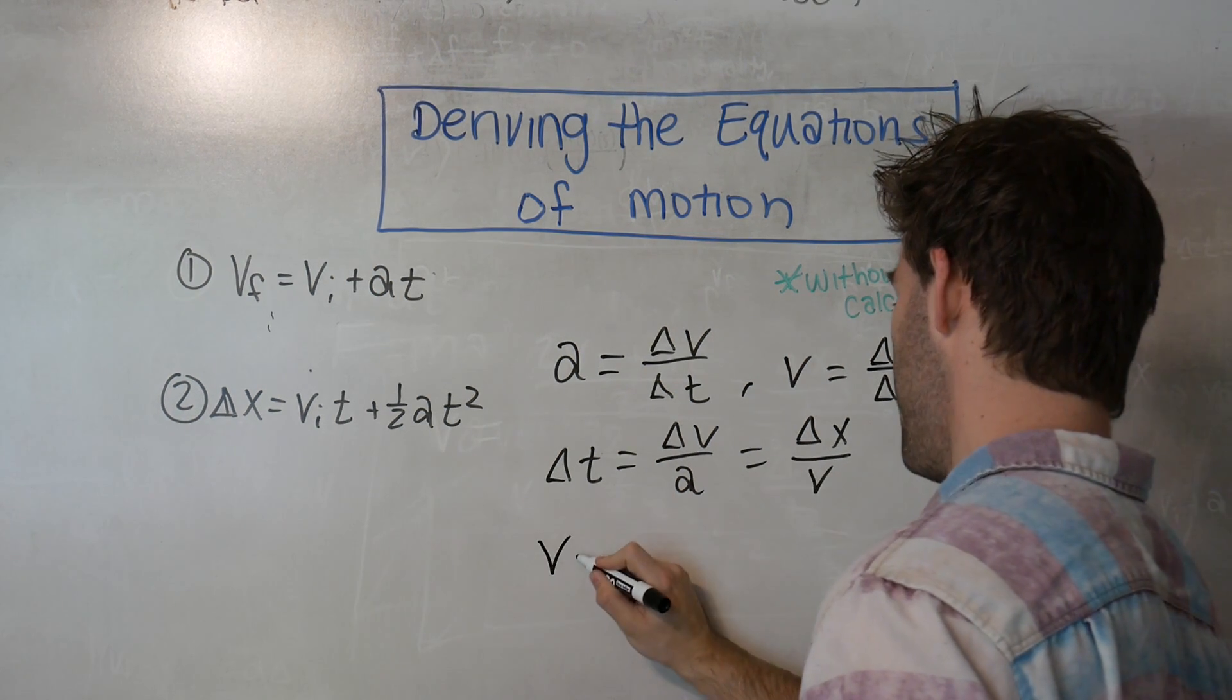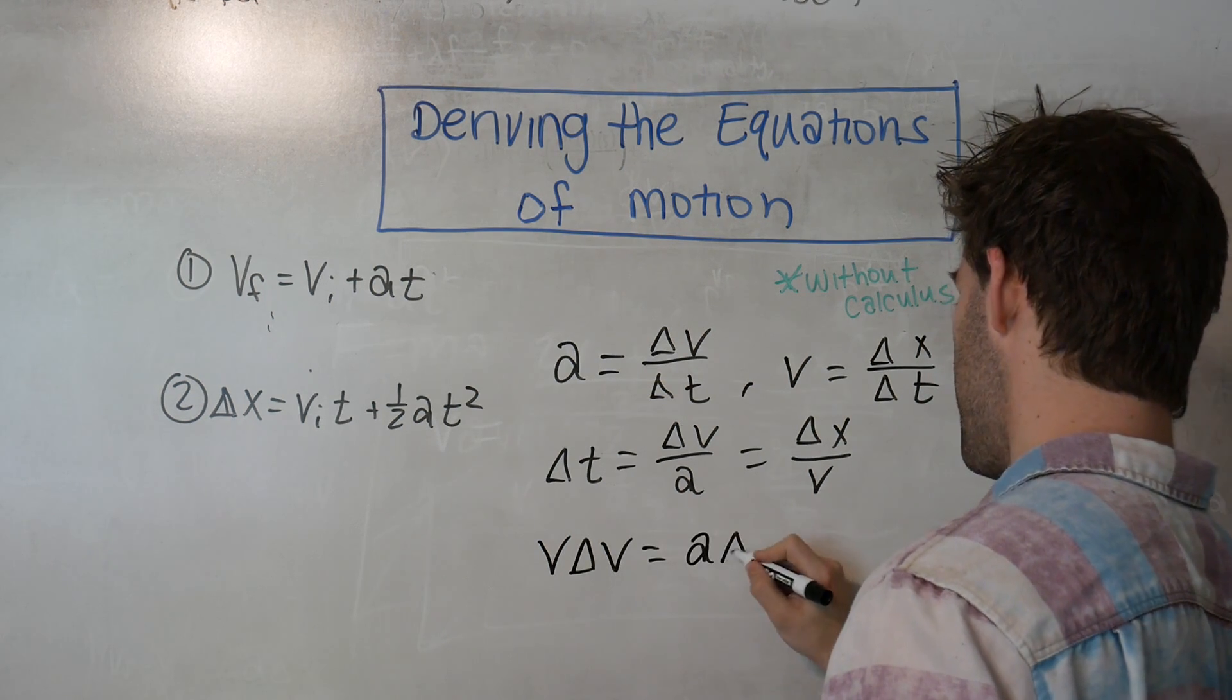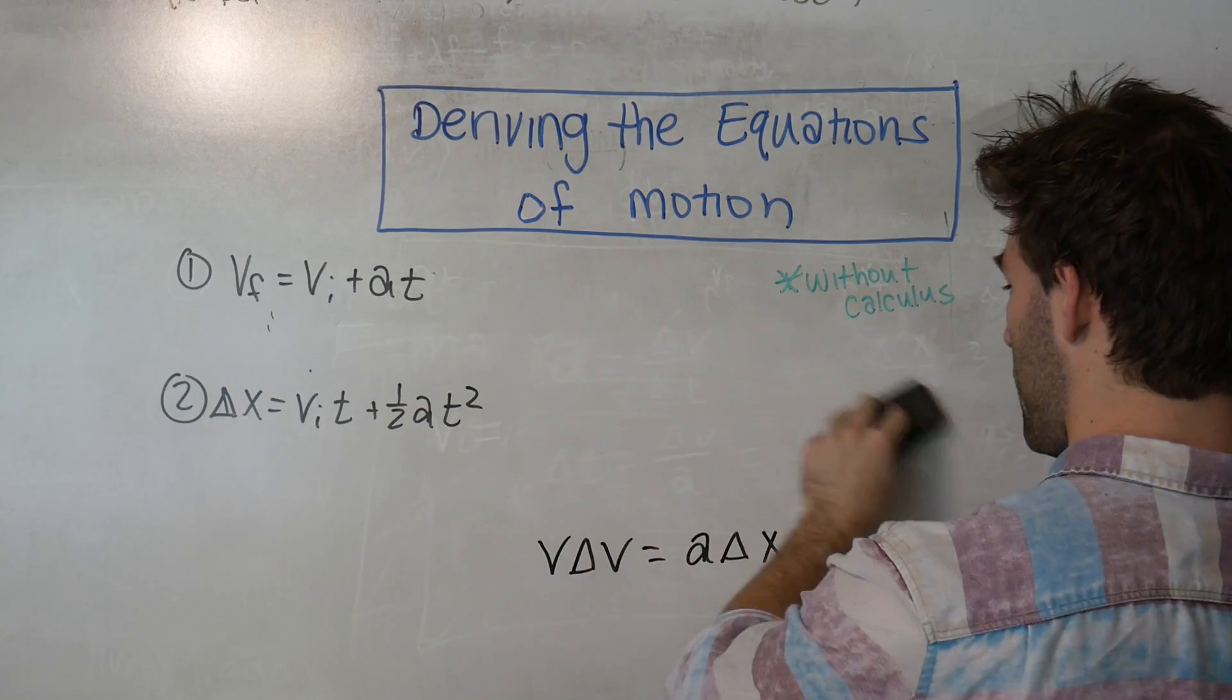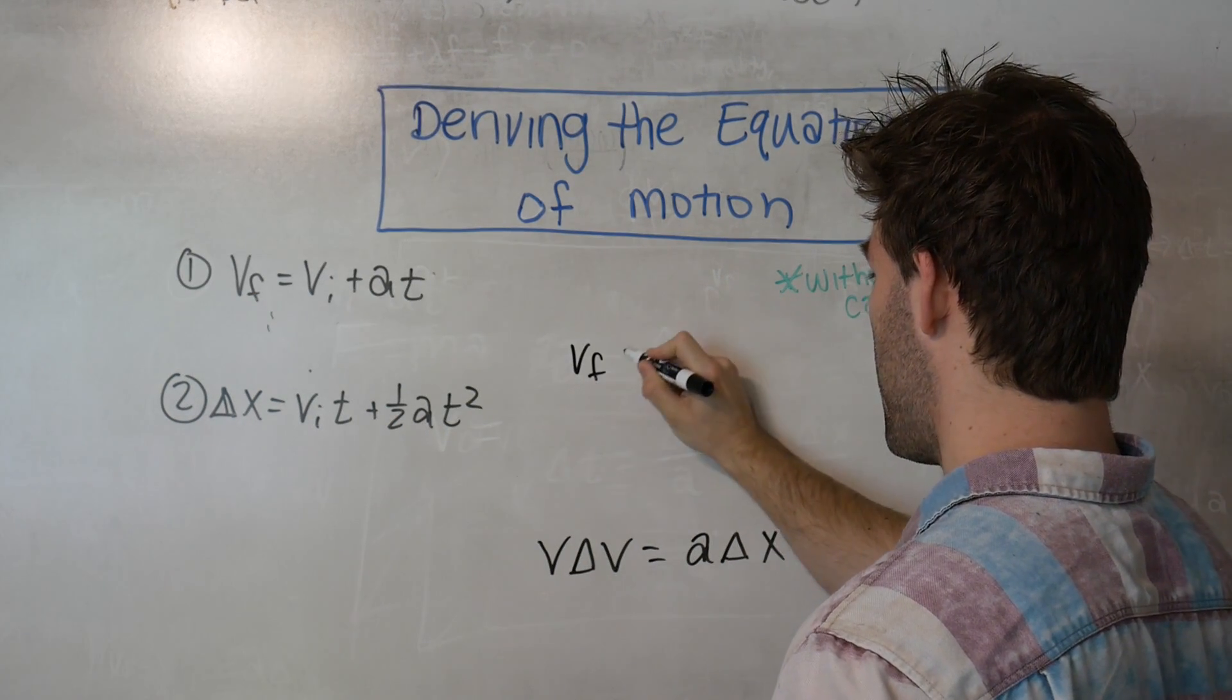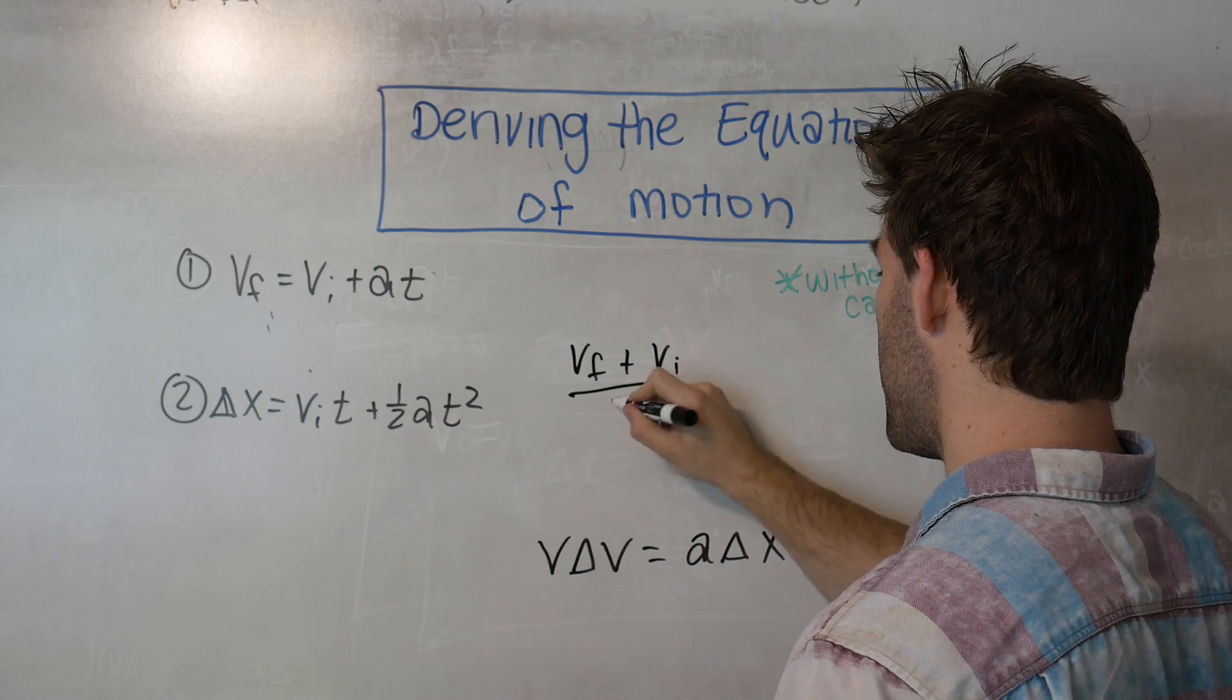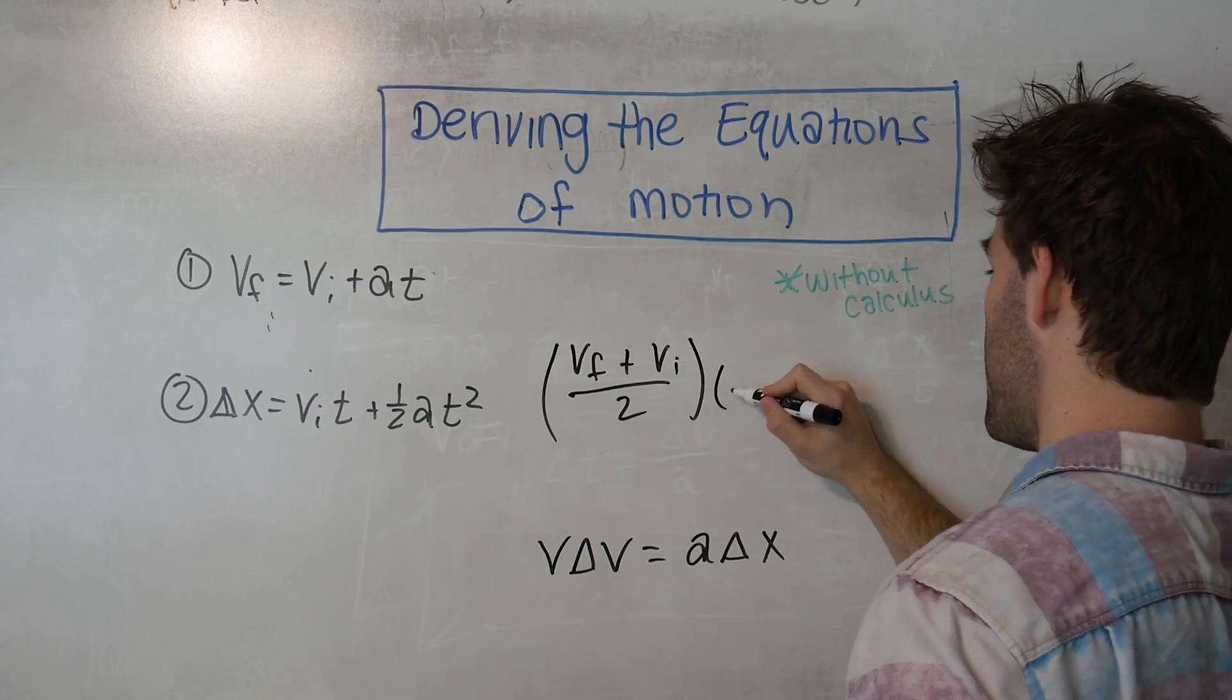and we see that V delta V is equal to A delta X. If you recall, we defined the average velocity as VF plus VI over 2. We know delta V is just VF minus VI.